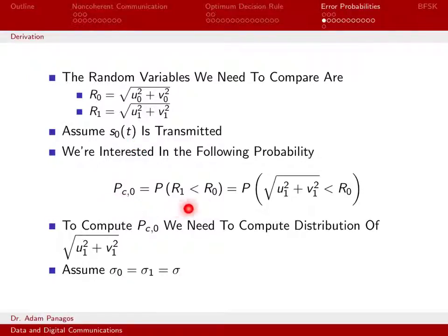The probability of being correct means that R1 is less than R0. If we're transmitting S0, we need R0 to be the larger quantity, greater than the square root of U1 squared plus V1 squared. To understand this, we need to understand the distribution of this random quantity.